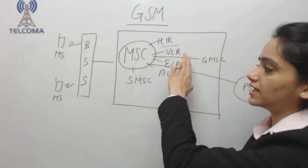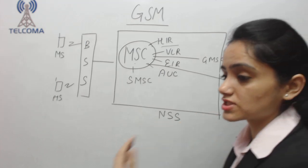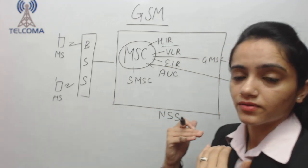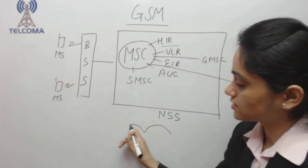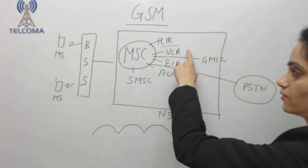Next we move to VLR. VLR is visitor location register. That means when we change our location, we are roaming, we are moving from one end to another end to another end and so on. That means all our changing locations will be saved in VLR.